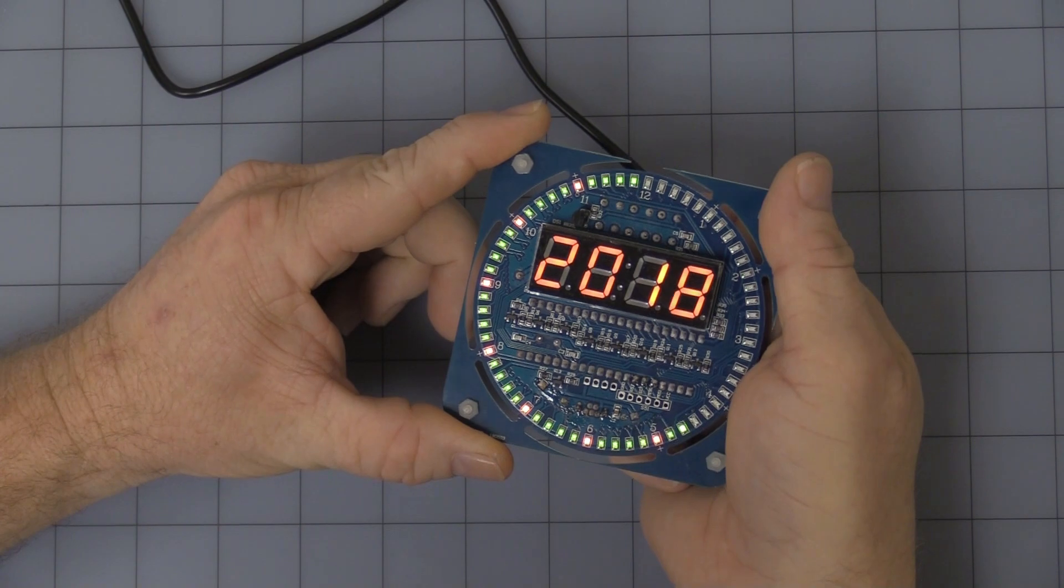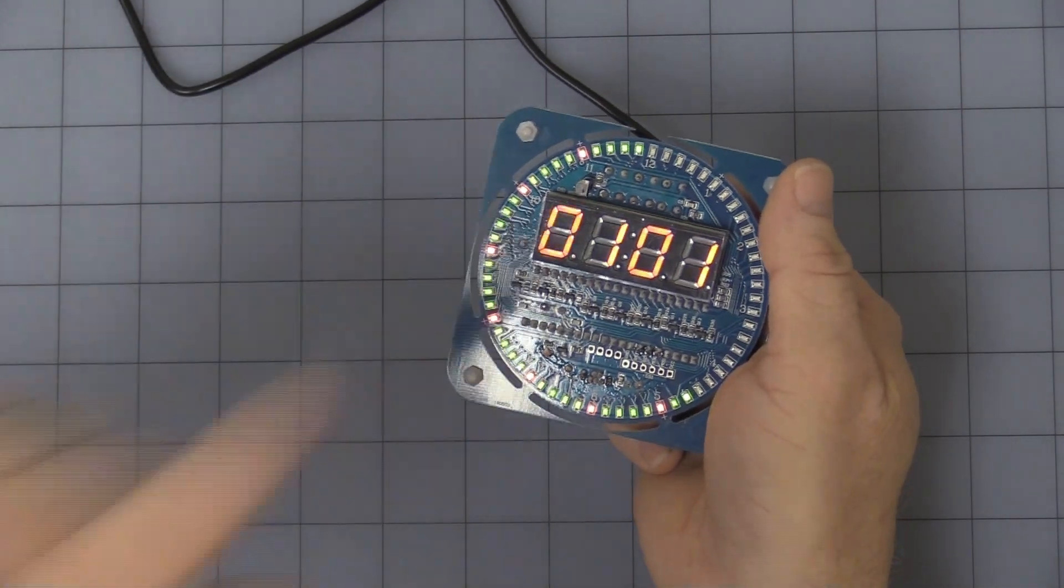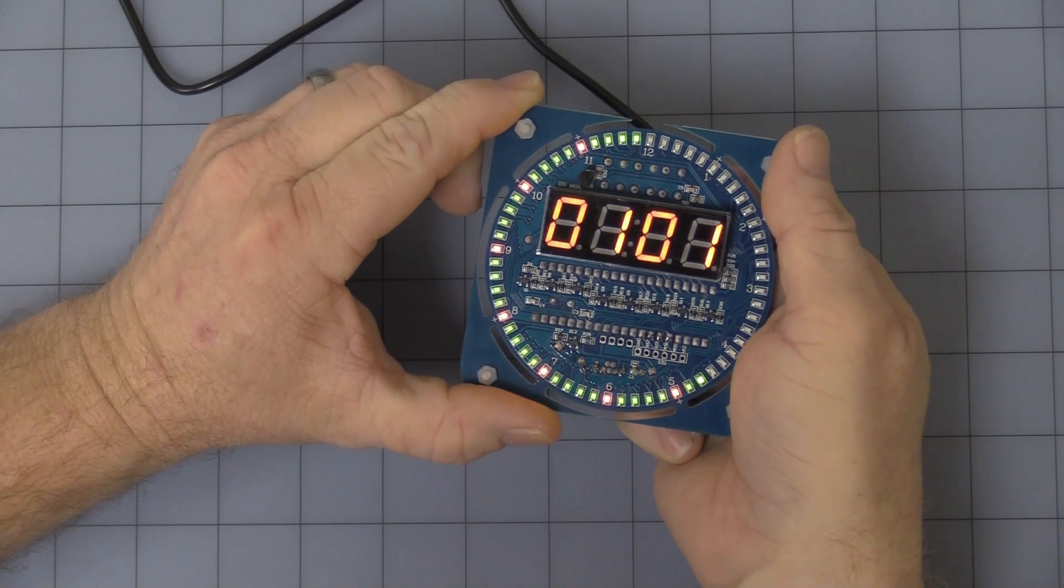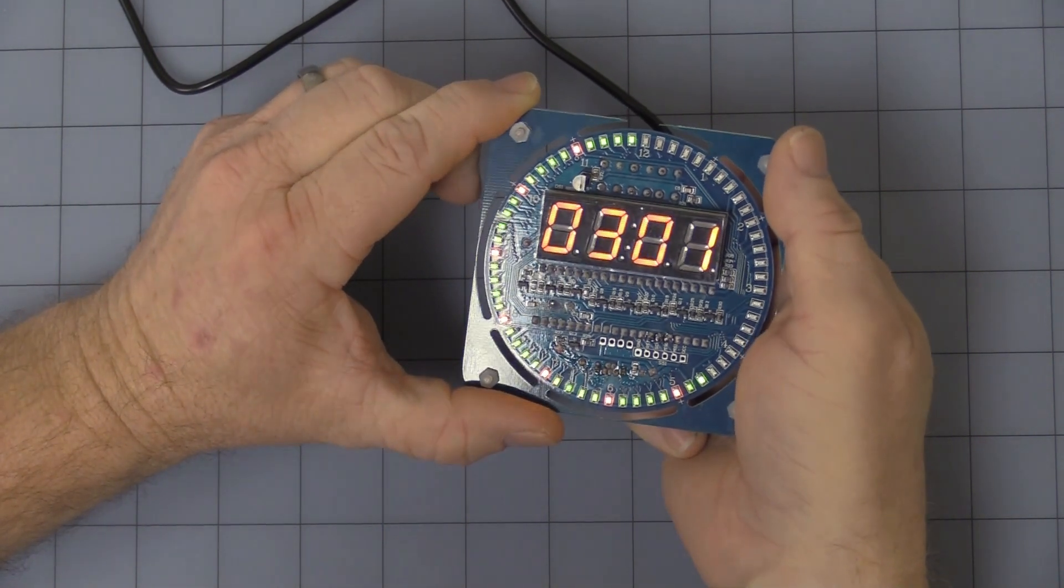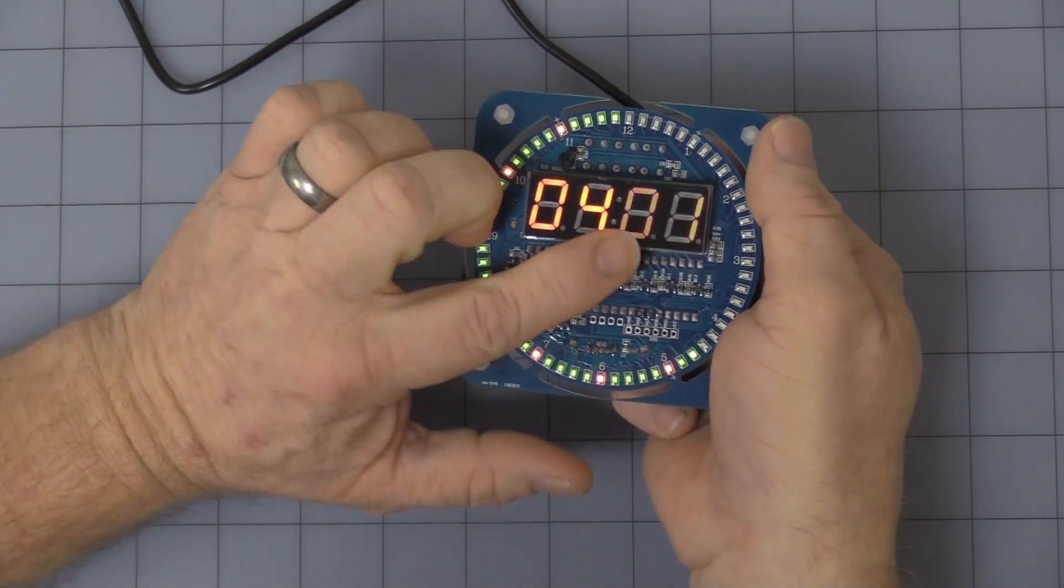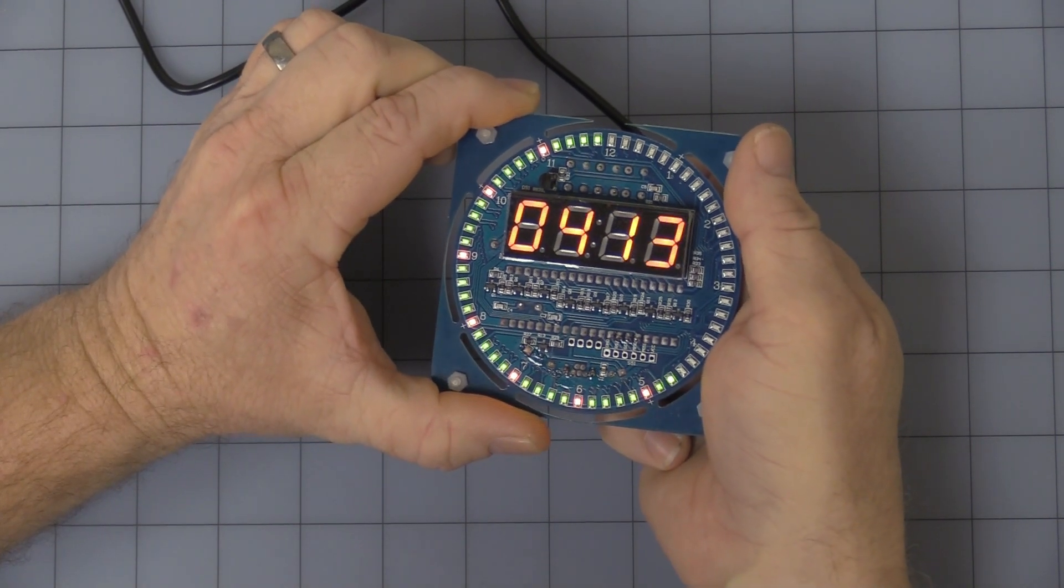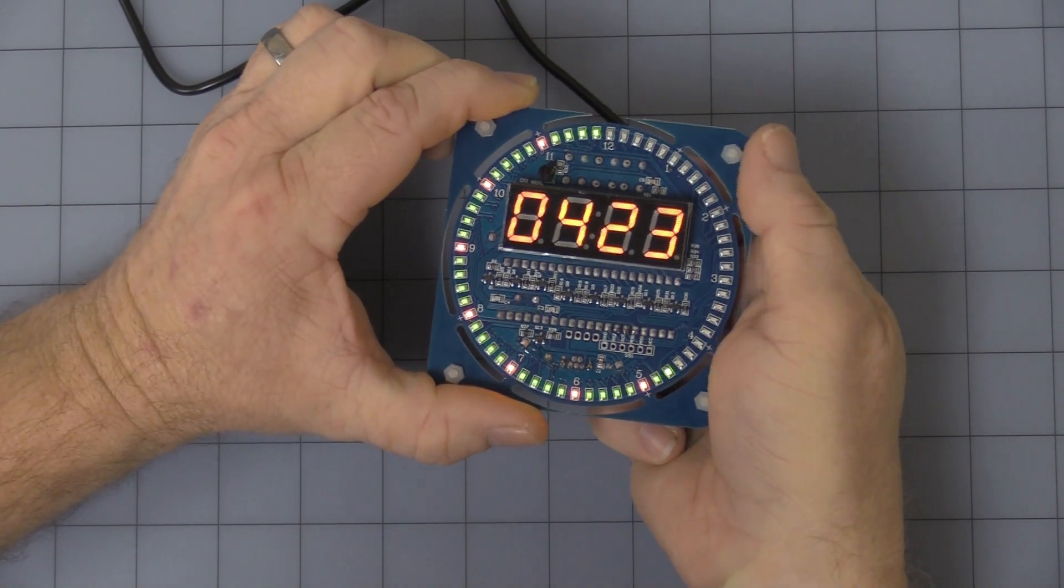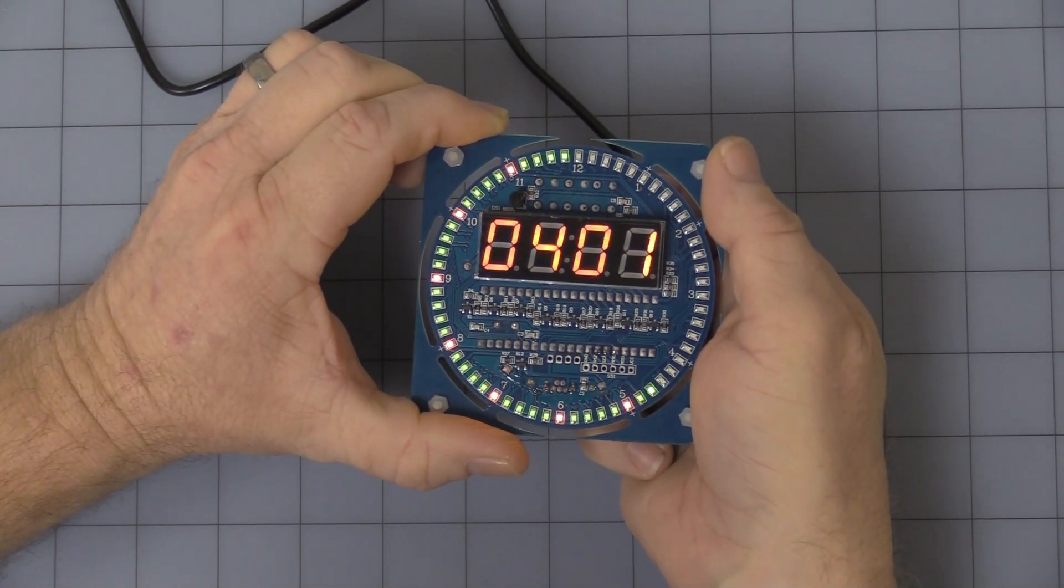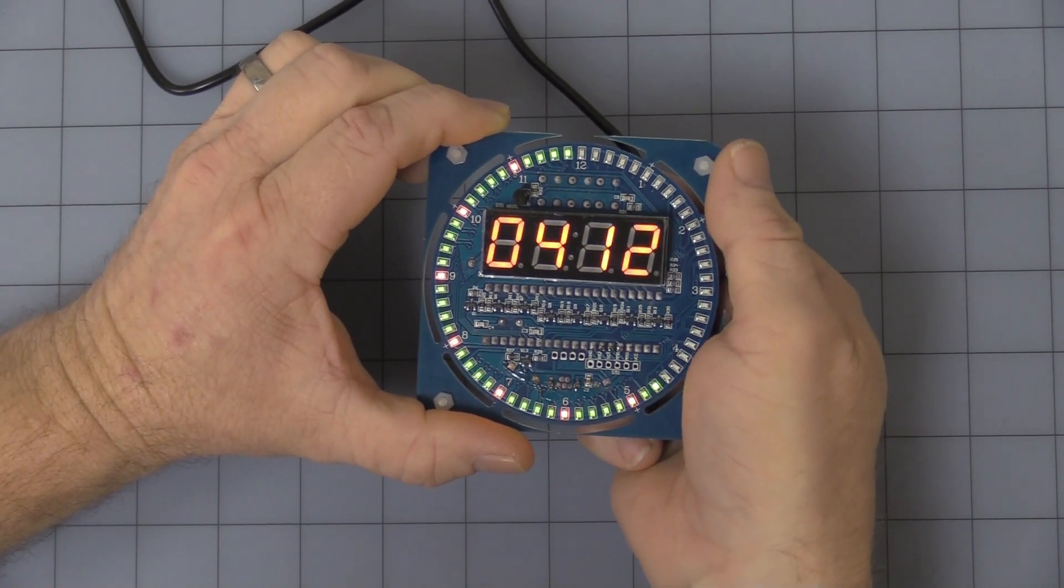Hit the mode button again and now this is the month. We're sure of that because when you hit the plus button you get to 12 then it resets to 1. Hit the mode button again and the day starts flashing. You have to press the button each time to count up, you can't simply press and hold unfortunately.